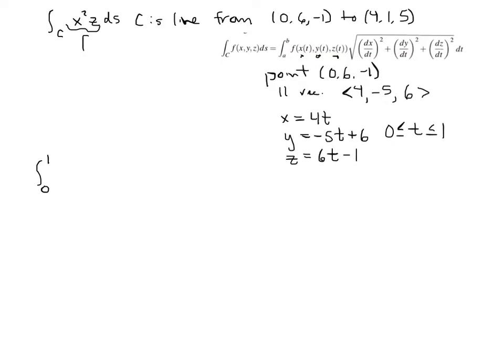Now this function here is this guy. So this is f. But this part says it's f, but plug in what x is. We found x. Plug in what y is. We found y. And plug in what z is. We found z. So we're going to plug those in. So x is 4t, so that would be a 4t squared there. And then z is 6t minus 1. So that's that function part right there.